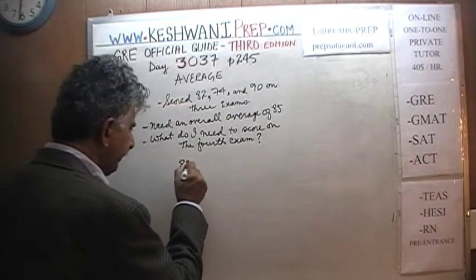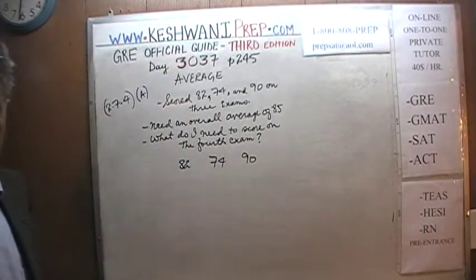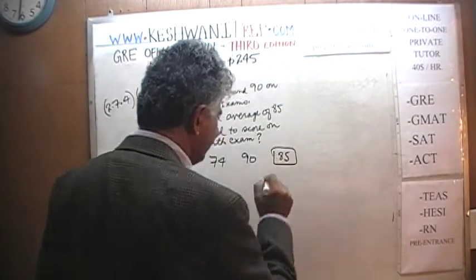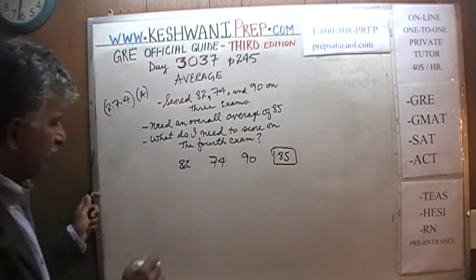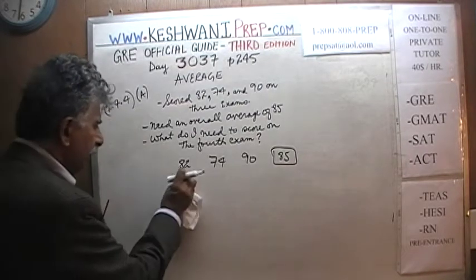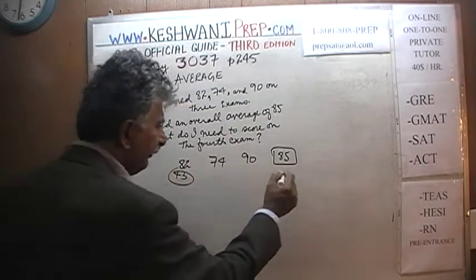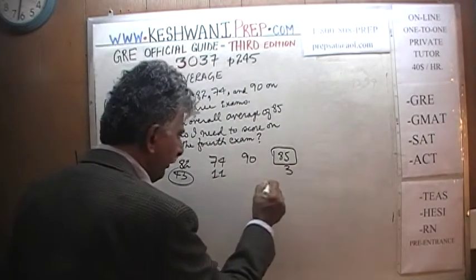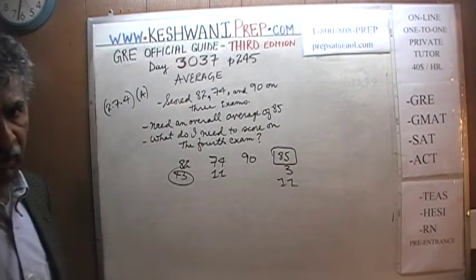82, 74, and 90 is what I scored in the three exams, and I want an overall average of 85. Did I get 85 on the first exam? No — I am three points short; I need to earn those three extra points. On the second exam, I got 74, so I am 11 points short; I need to make up those 11 points. And on the third exam, I actually have a surplus — I have a surplus of five points.